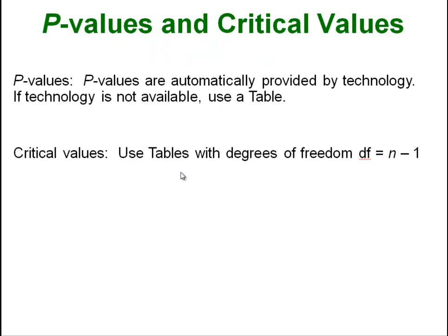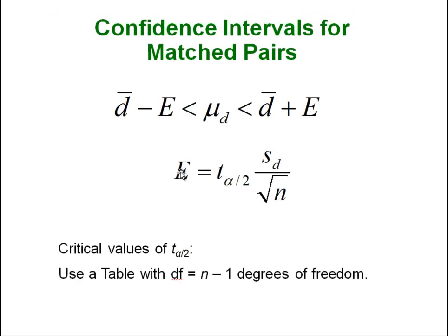P values are still going to come out of the technology because we are just going to be running a normal one sample t test or t interval depending on what we are doing. We can get p values out of that just like normal, critical values we can get out of tables. Our degrees of freedom are still going to be n minus 1, so everything is really the same. Our interval equation is really just identical to what it is when we have one set of things instead of these differences.